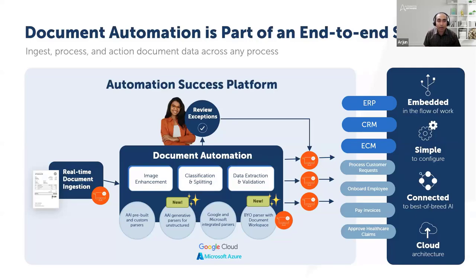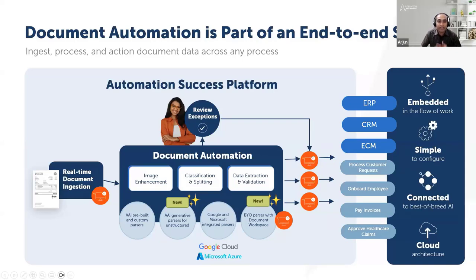Document automation is essential for processing any kind of documents. If you have PDFs, TIFF files, or images, you can process all of these through document automation. Since it is integrated with the RPA platform and Automation Co-pilot, you'll see how seamlessly they work together. You can ingest one document or hundreds of documents, and all this will be executed as part of Automation Co-pilot one by one, and then you'll be able to see the responses from the extracted content.